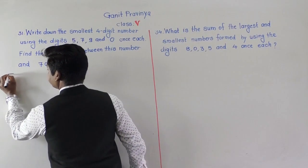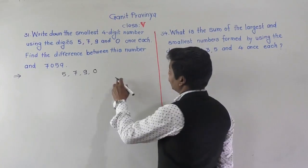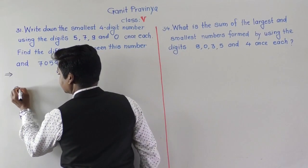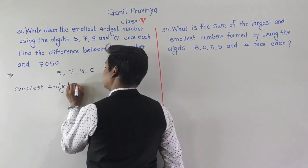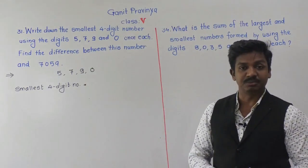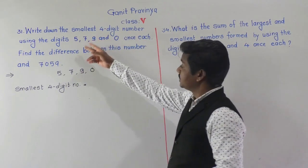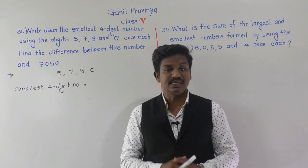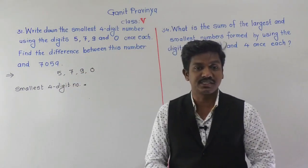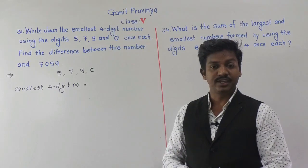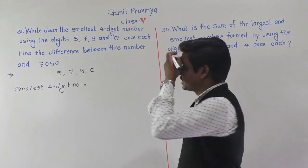So in this question, four digits are given: 5, 7, 9 and 0. Using these digits we have to form the smallest four digit number. We have to use each digit once — meaning repetition of digits is not allowed. So whenever we have to form the smallest number and repetition is not allowed, the way is to arrange the given digits in ascending order.